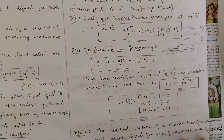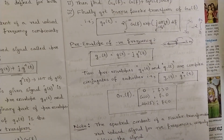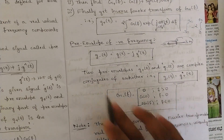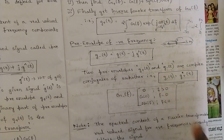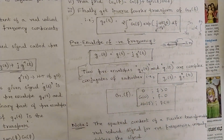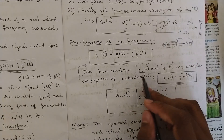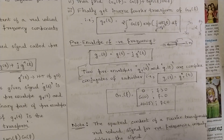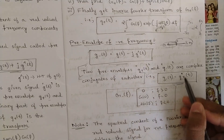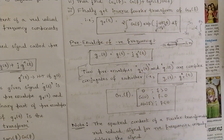Now let's discuss the pre-envelope of negative frequency, when the negative frequencies are not eliminated and kept as they are. The pre-envelope of negative frequency is G-(t) = g(t) minus j·ĝ(t). The two pre-envelopes G+(t) and G-(t) are complex conjugates of each other. This relation you should keep in mind, because if you know this relation the theoretical parts can be easily remembered.